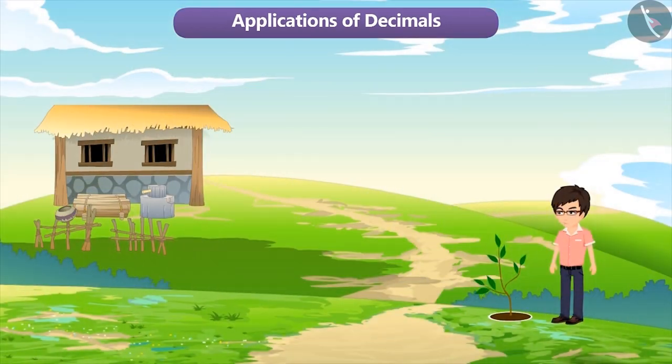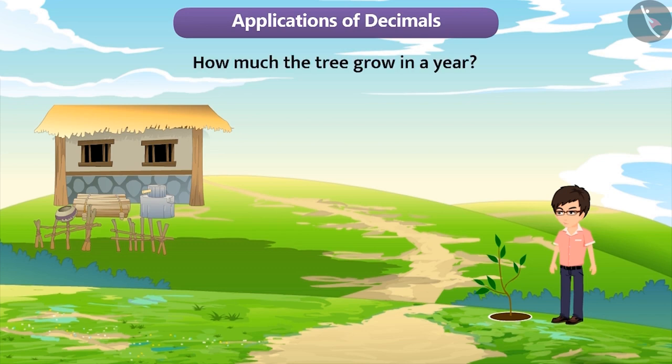Mohit planted a tree near his house. He wanted to find out how much a tree grows in one year. So, he measured the height of the tree on the first day of the year, which is 1.48 metres.